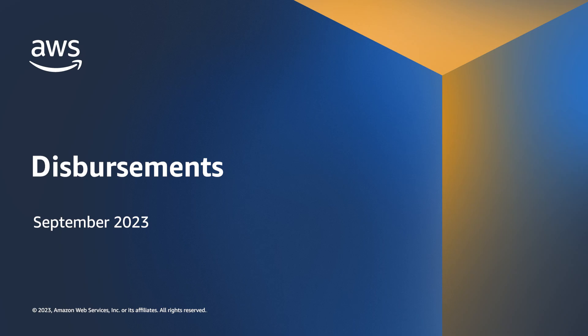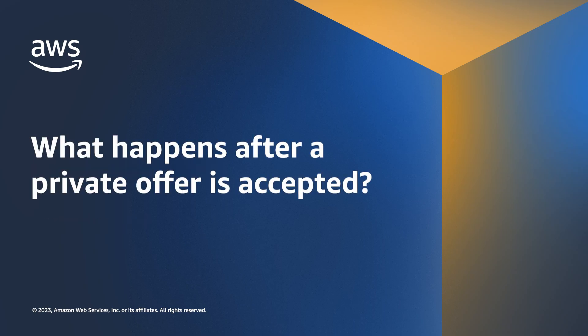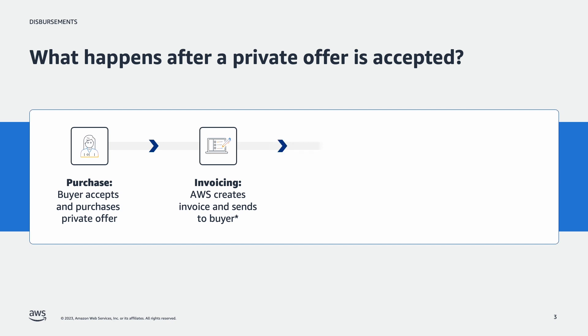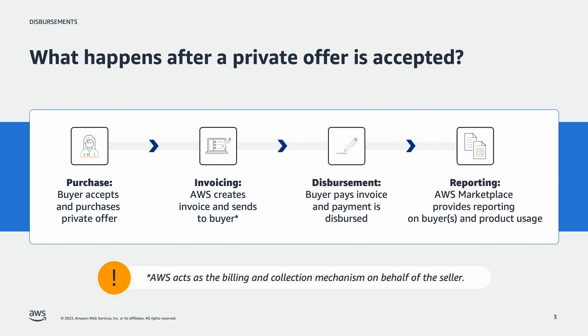In this video, we're going to review private offer disbursements. First, let's review what happens after a private offer is accepted. After a private offer is accepted and the buyer purchases the offer, there are three key steps left in the process – invoicing, disbursement, and reporting. In this session, we'll go over disbursements.